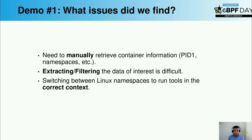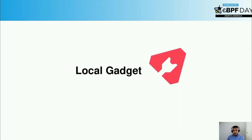Also, for something like getting sockets for a container — each container runs on a different network namespace, unless it's using host networking. If we want to get sockets, we need to switch into the network namespace of that container and then run our tools. There are still many things to do manually, and you need a good background on Linux namespaces to do this. So let me introduce local gadget.